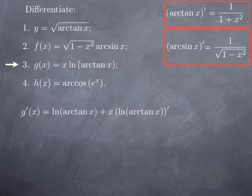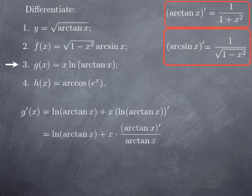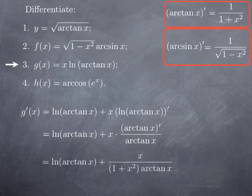To differentiate ln(arcsin x), we have arcsin x plugged inside the natural log. Applying the chain rule — and recalling that the derivative of ln(x) is 1 over x — we get the derivative of arcsin divided by arcsin. So we obtain ln(arcsin x) plus x times the derivative of arcsin divided by arcsin. The derivative of arcsin is 1 over square root of 1 minus x squared.